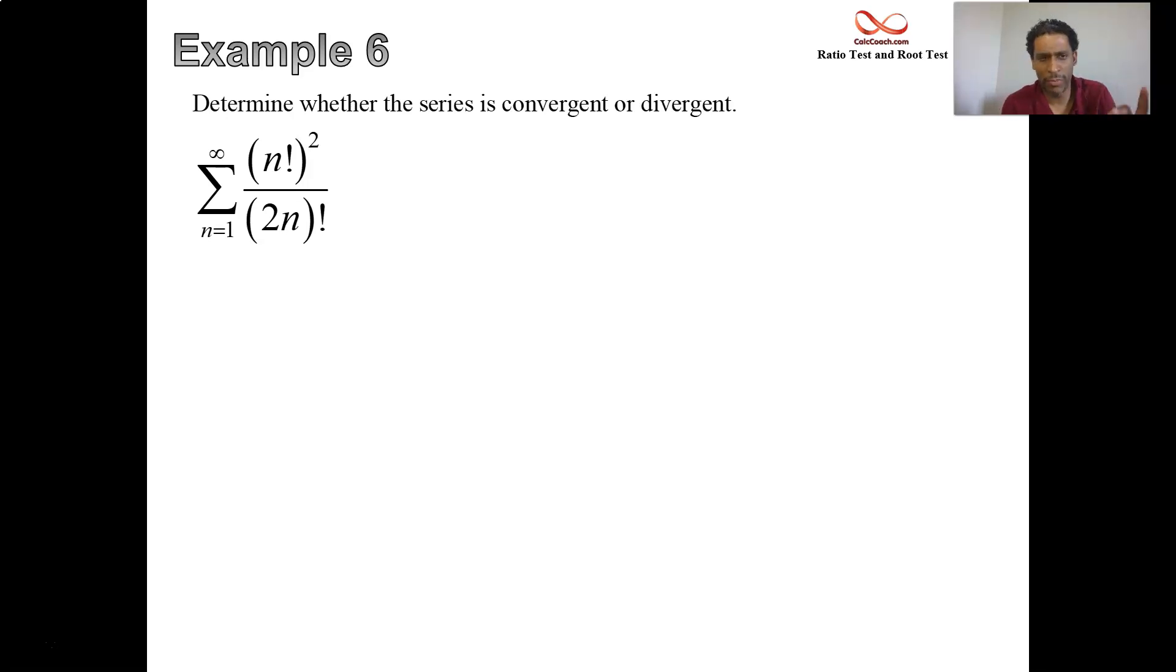The very first thing you should do to simplify things: that numerator of n factorial squared, you should treat that as basically two copies of n factorial. So let's call that n factorial and n factorial, because we know how to handle them separately. When they're together it can get really confusing.